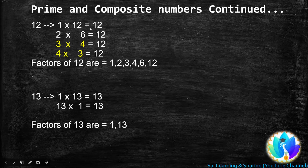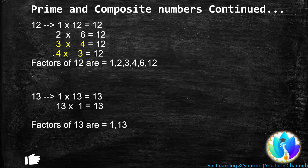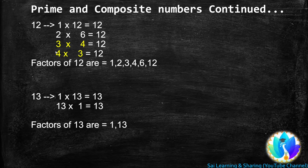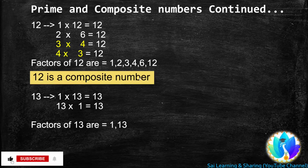Next, 12. 1 is a factor of every number, so 1 × 12 = 12. 12 is a multiple of 2: 2 × 6 = 12. 12 is a multiple of 3: 3 × 4 = 12. 12 is a multiple of 4: 4 × 3 = 12. We stop here because both 3 and 4 have occurred earlier. So the factors of 12 are 1, 2, 3, 4, 6, and 12. Since 12 has more than two factors, 12 is a composite number.